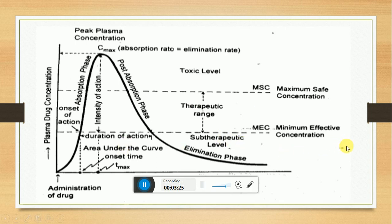Various pharmacodynamic parameters obtained include onset of action — when the drug starts showing a pharmacological response, that is called onset of action. The time at which this pharmacological response is shown is called onset time.